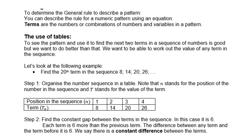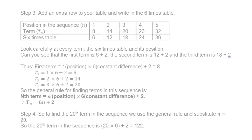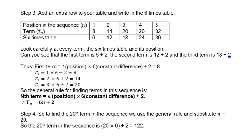For instance, 14 minus 8 is 6; 20 minus 14 is 6; 26 minus 20 is 6 — so the constant difference is 6. Step 3: add an extra row to your table and write in the 6 times table: 6, 12, 18, 24, 30.